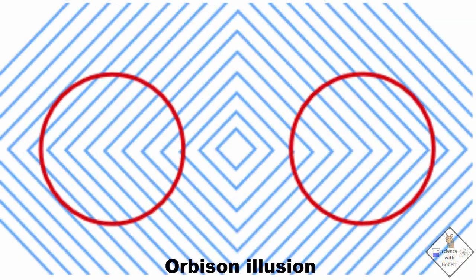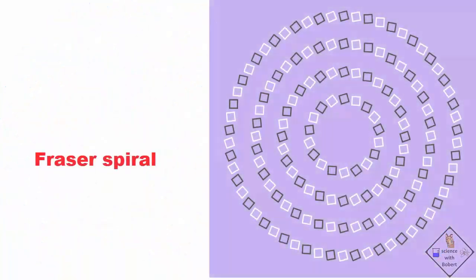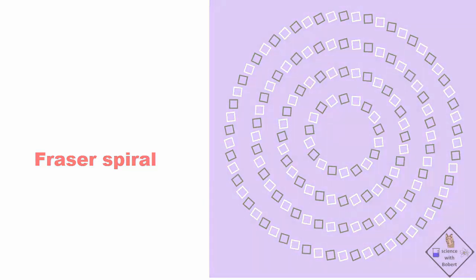This illusion is classified as an Orbison illusion. The circles drawn over straight lines coming out from the center make the circles look distorted. This is a Fraser spiral illusion. Your brain makes you believe it is a spiral, however it is not, just circles. Follow the fake spiral with your finger to prove it to yourself.